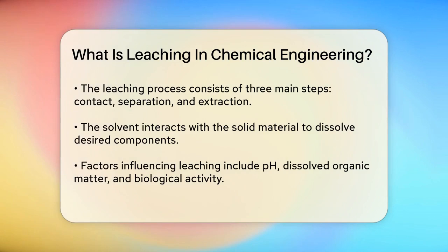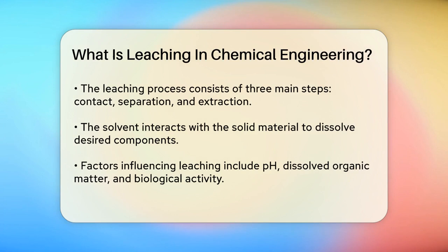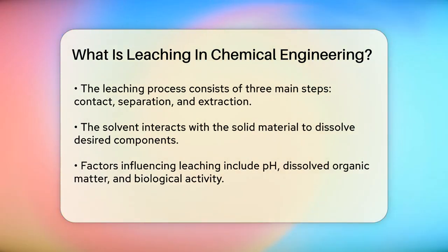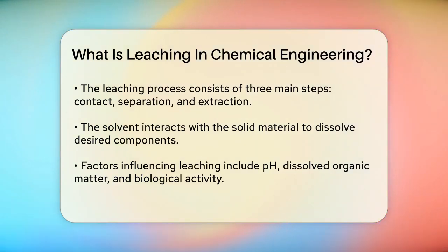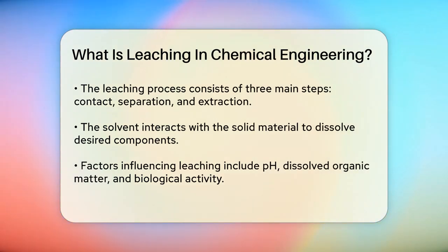In chemical engineering, leaching involves several key steps: contact, separation, and extraction. First, the solvent comes into contact with the solid material — this could be water, acid, or any other liquid that can dissolve the desired components. The solvent then separates the solute from the solid matrix, and finally the solute is extracted from the solution.